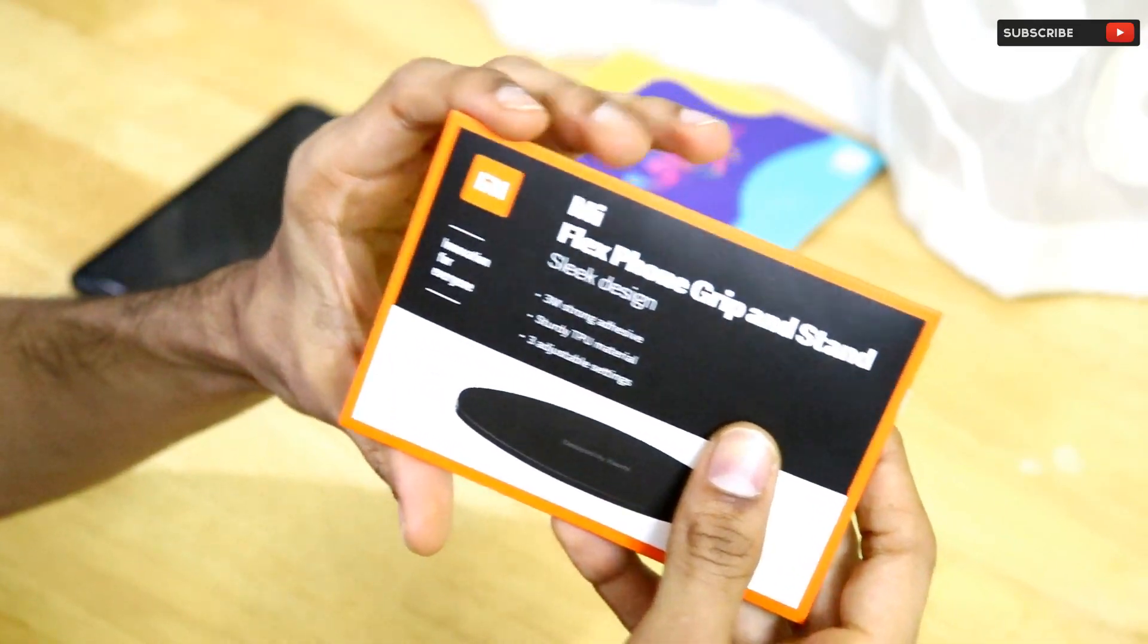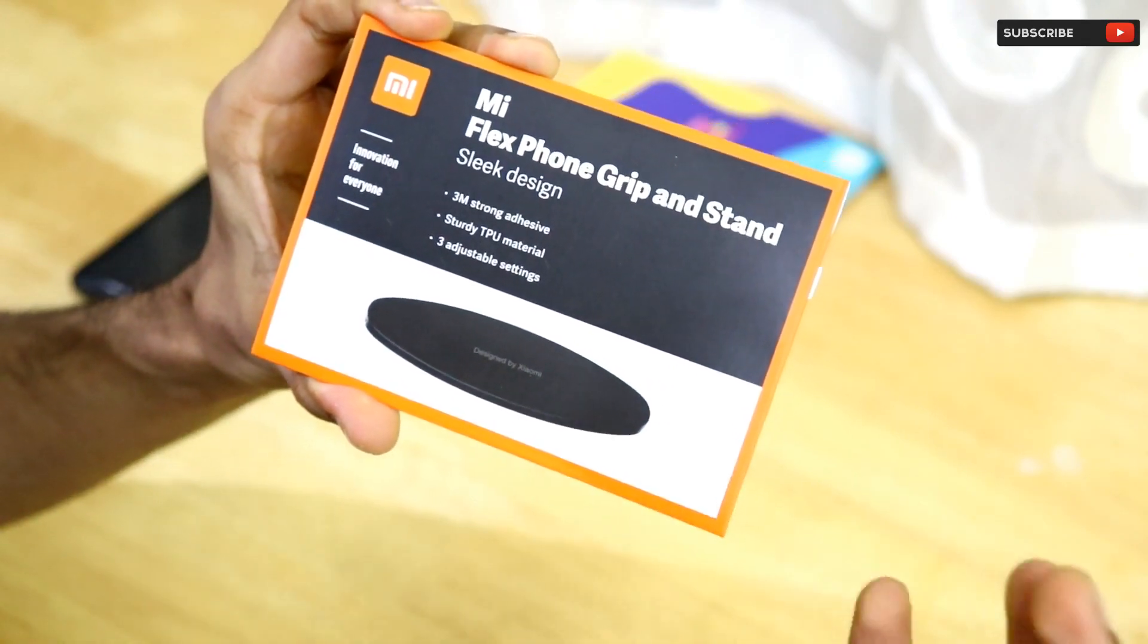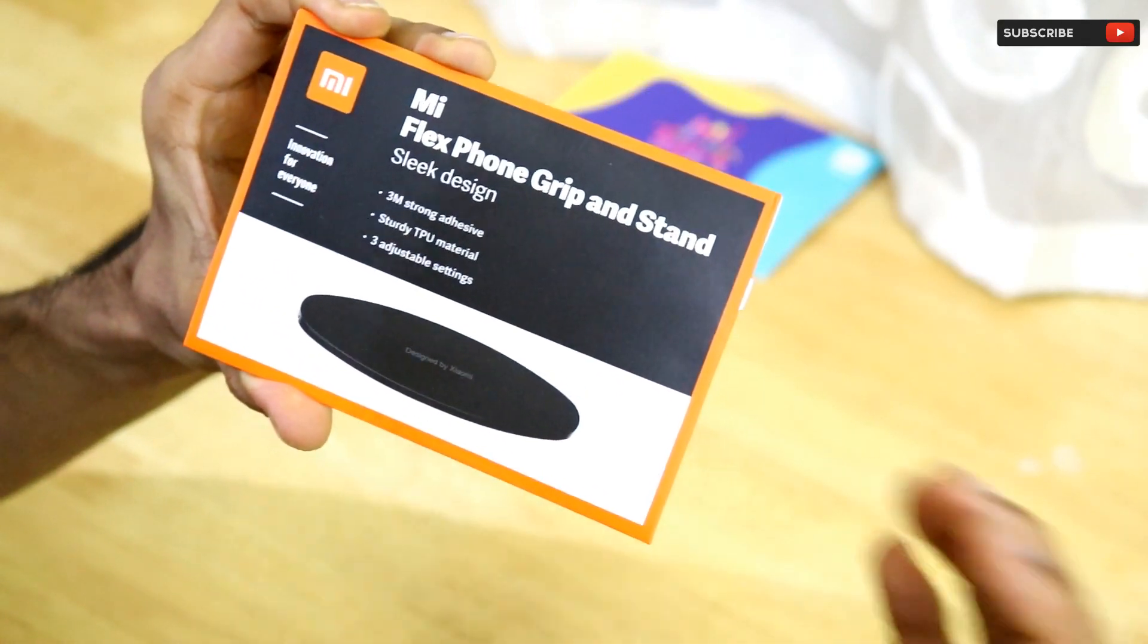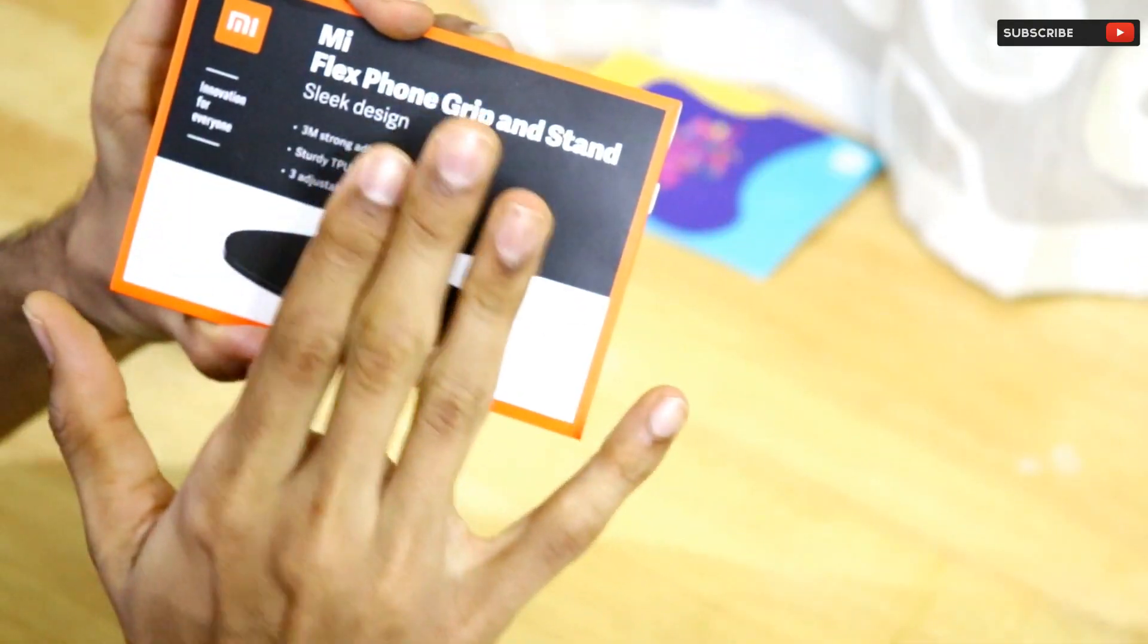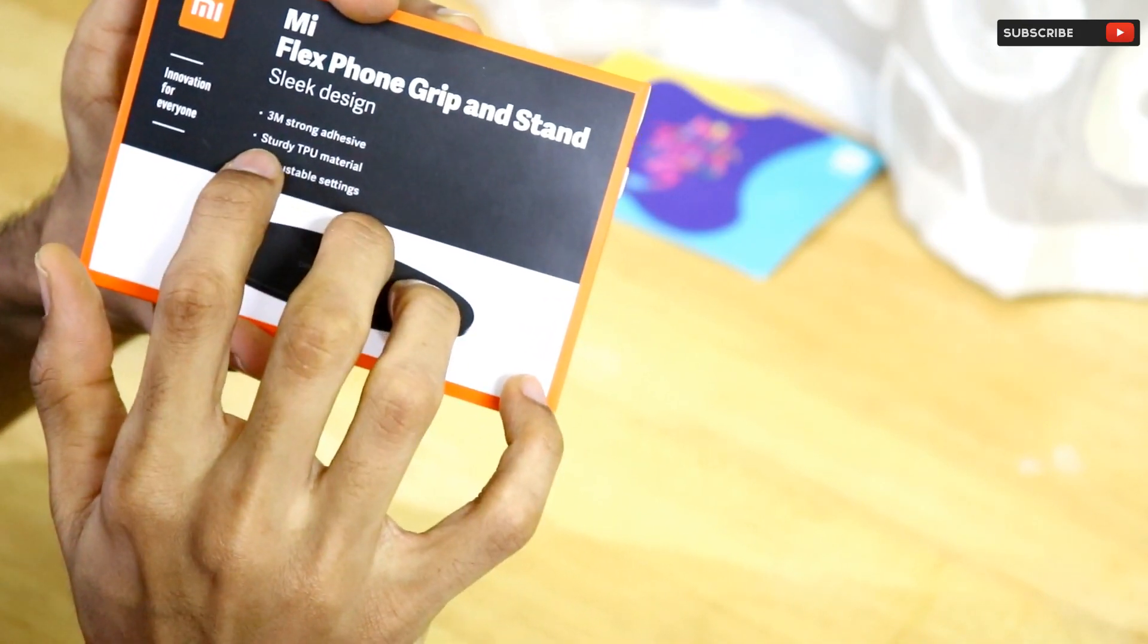If you have a smartphone like a OnePlus 7 Pro or the Redmi K20 Pro, or any other smartphone with a very large display where handling it in one hand is difficult, then this Mi Flex Grip is for you. On the cover it mentions that it's made with 3M strong adhesive, sturdy TPU material, and three adjustable settings.